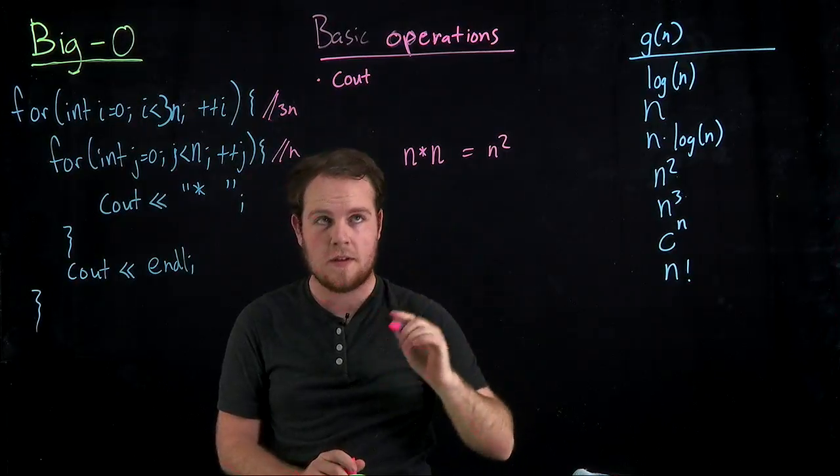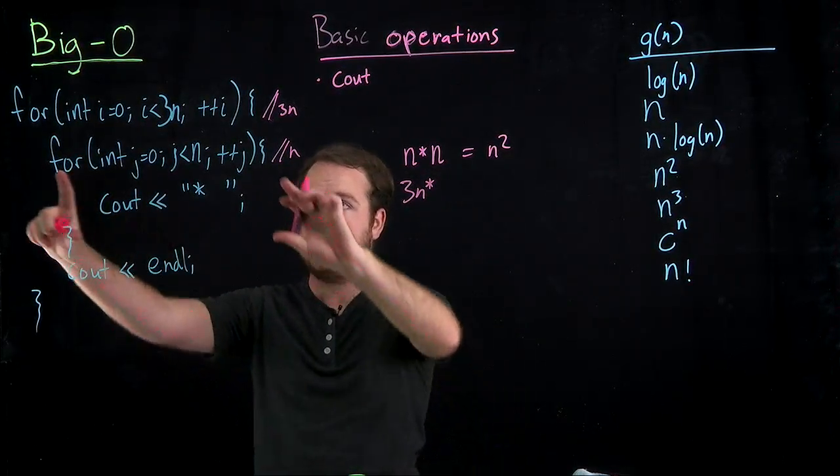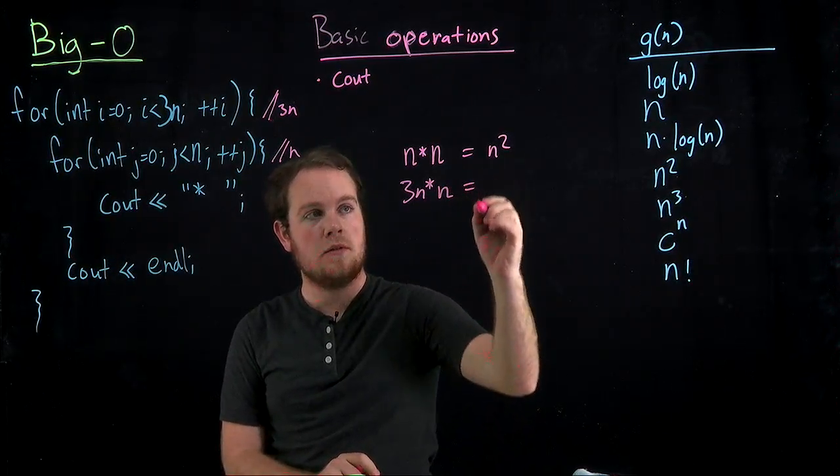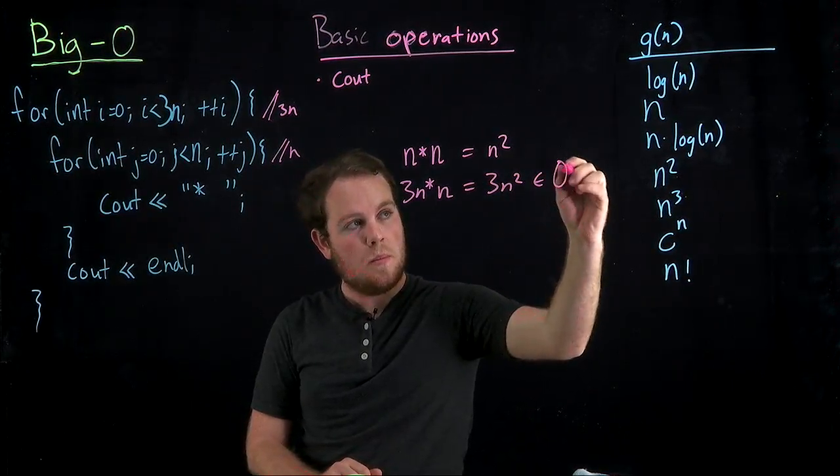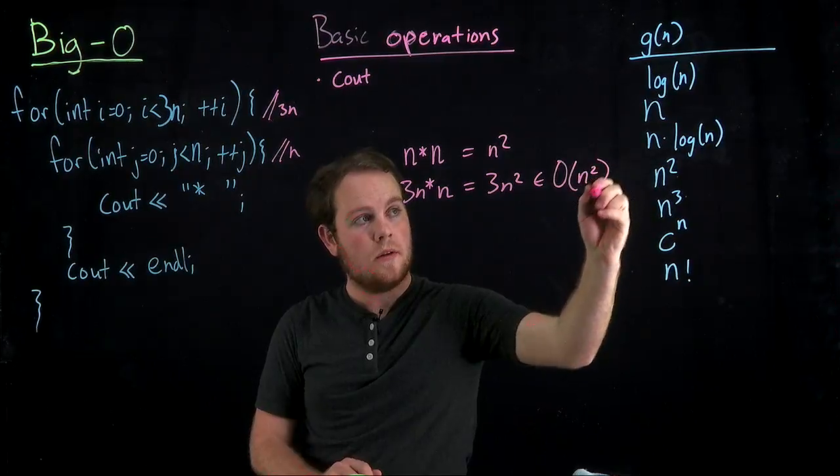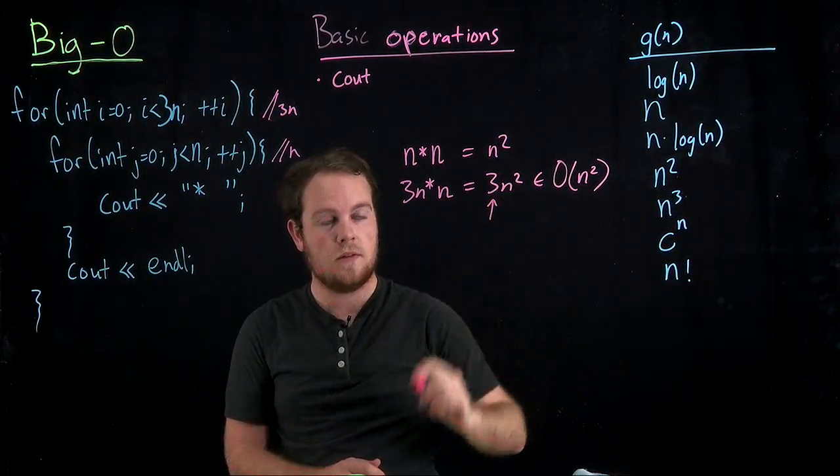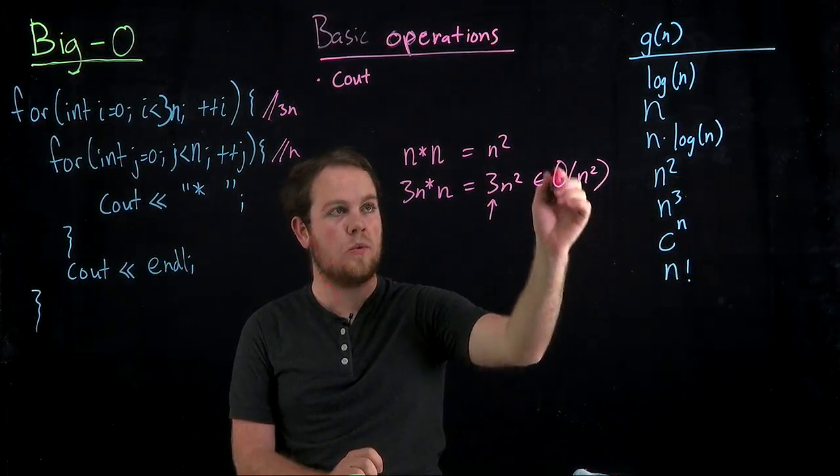And now, because they're still nested in the same way, we have 3n, which is the outer for loop, times it's doing this inner portion n times n, which gives us 3n squared, which is still O of n squared. Right? Because we ignore constant multipliers like this. And we just care about the actual overall efficiency.